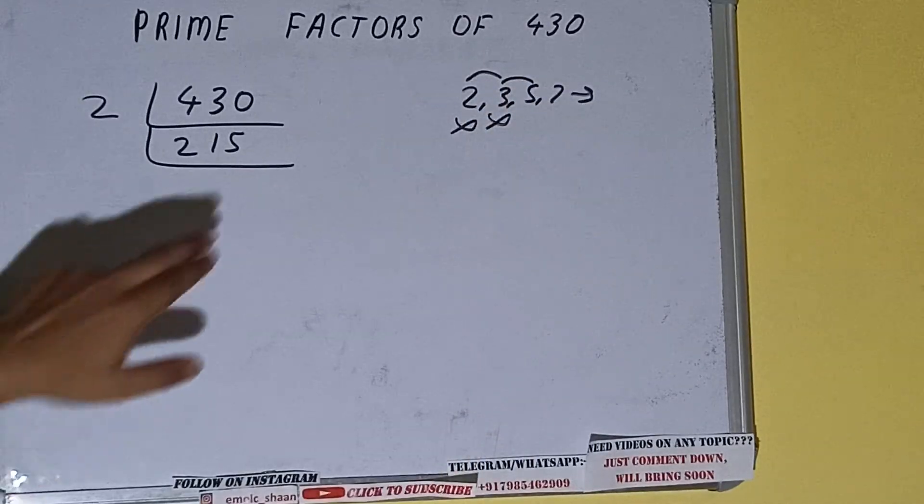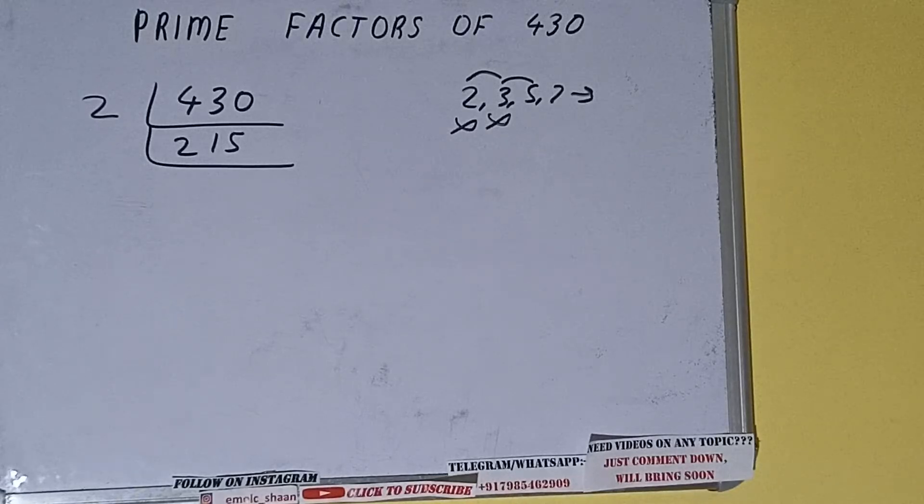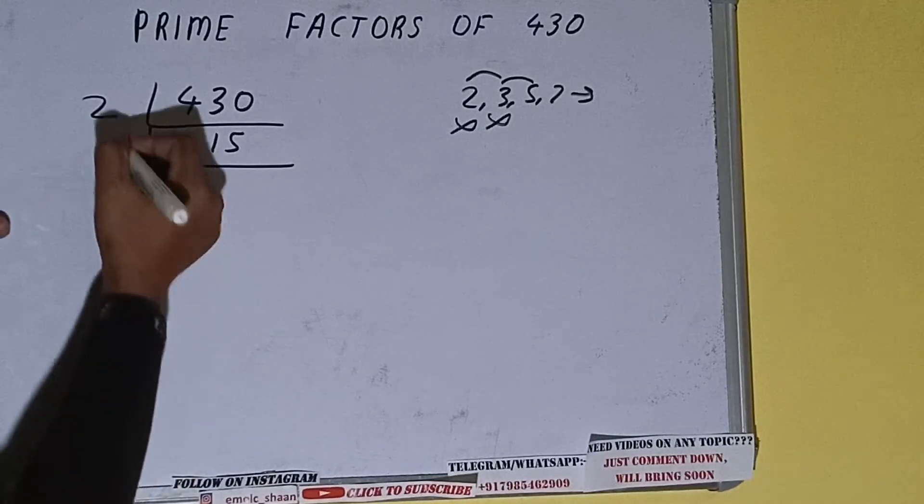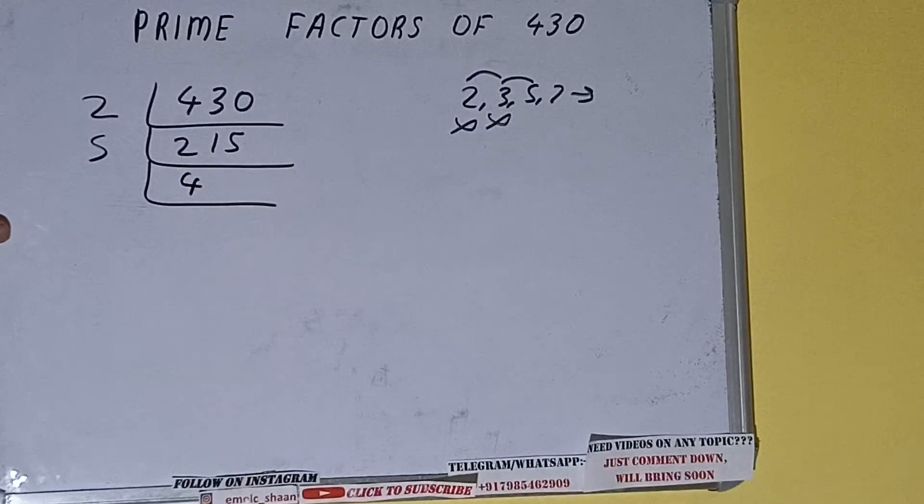Let's check with 5. The last digit is 5, so yes it is divisible by 5. So divide it and we'll be having 5 fours are 20, 5 threes are 15.